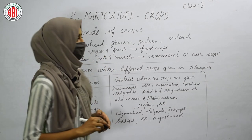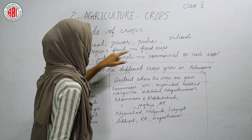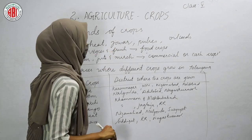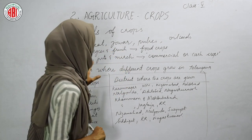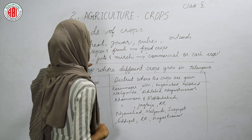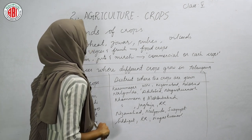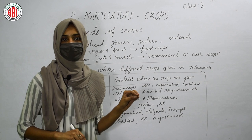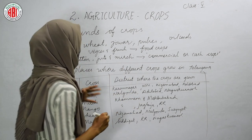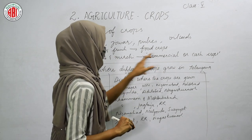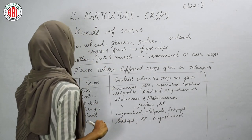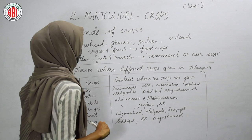Our next topic is kinds of crops. There are two kinds: food crops and commercial or cash crops. Food crops are grown for eating — rice, wheat, jowar, pulses, oil seeds, vegetables, and fruits. Cash crops are grown for commercial purposes and sold — examples include cotton, jute, and mirchi.